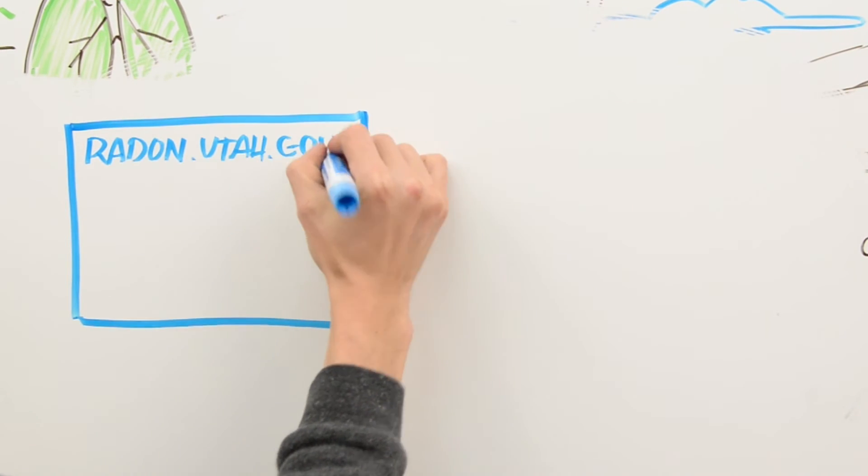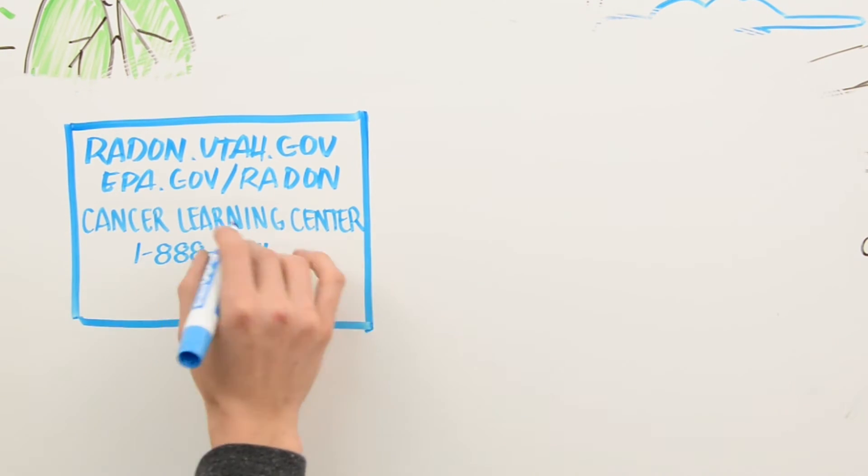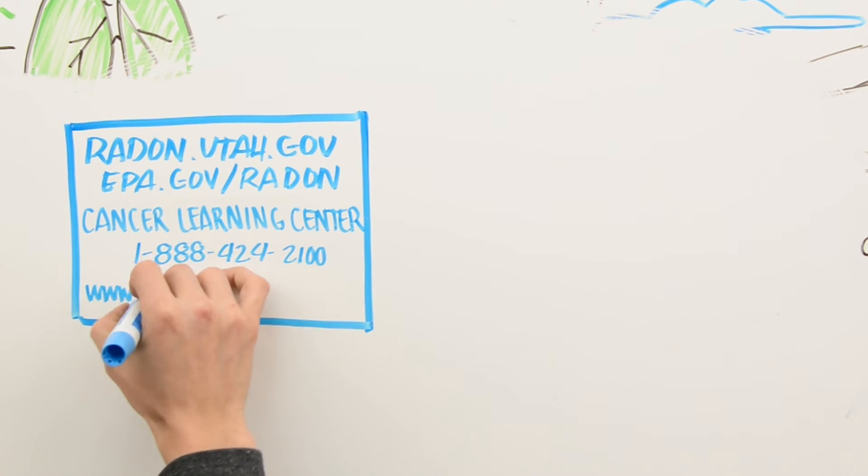Go to radon.utah.gov or epa.gov/radon. Order your test kit today.